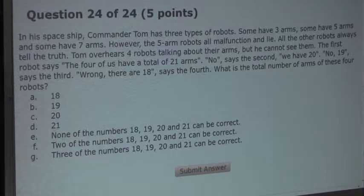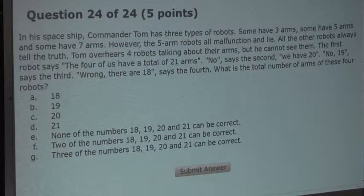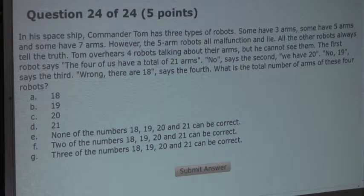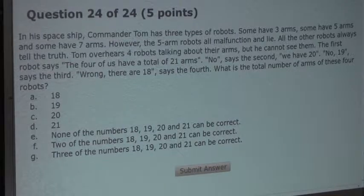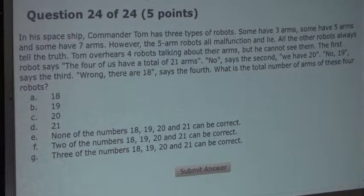Tom overhears four robots talking about their arms, but he cannot see them. The first robot says, the four of us have a total of 21 arms. No says the second, we have 20. No, 19 says the third. Wrong, there are 18 says the fourth. What is the total number of arms of these four robots?